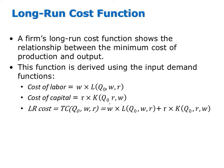A firm's long-run cost function shows the relationship between the minimum cost of production and output. This function is derived using input demand functions. That is, to derive long-run cost, you first need to derive input demand.